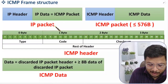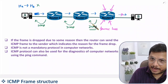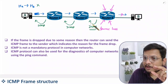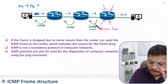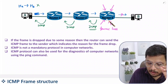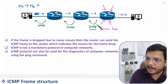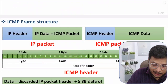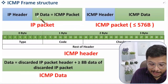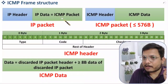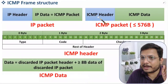Technically, whenever you forward an ICMP packet, you are actually forwarding an IP packet. In that IP packet, Router 3 will put its own source address and the destination address of Host A. Inside the IP packet's data field, there will be the ICMP packet.